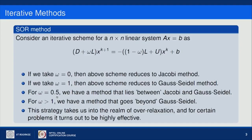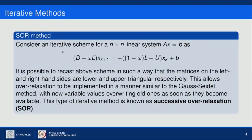For omega equals 0.5 we have a method that lies somewhere between Jacobi and Gauss-Seidel. If omega is greater than 1 we have a method that goes beyond the Gauss-Seidel method, taking us into the realm of over-relaxation, which for certain problems turns out to be highly effective in terms of convergence.